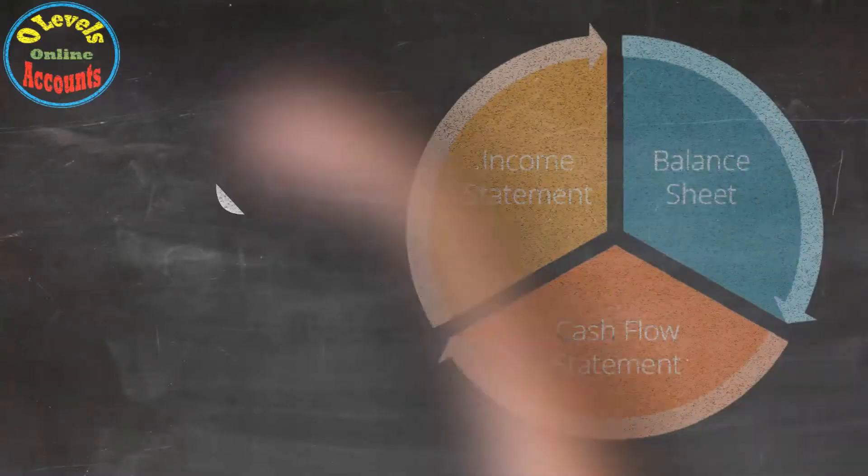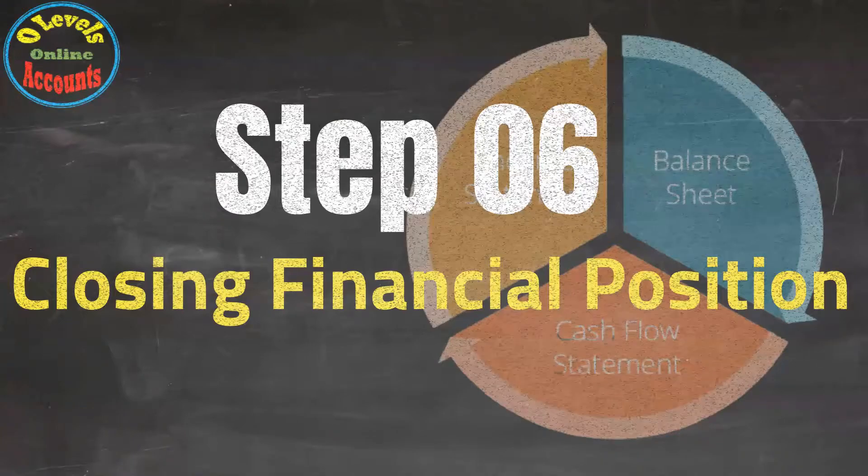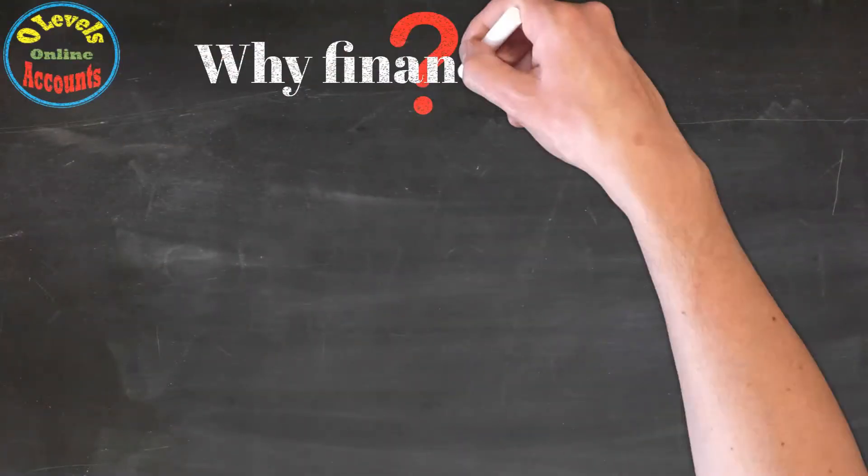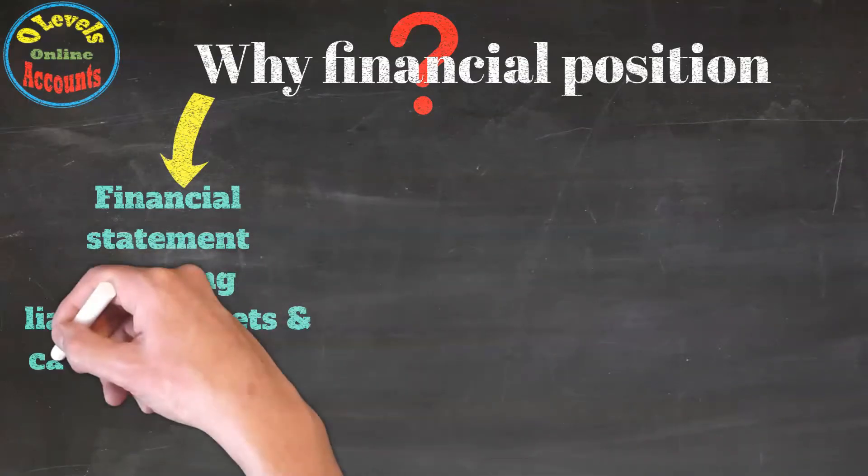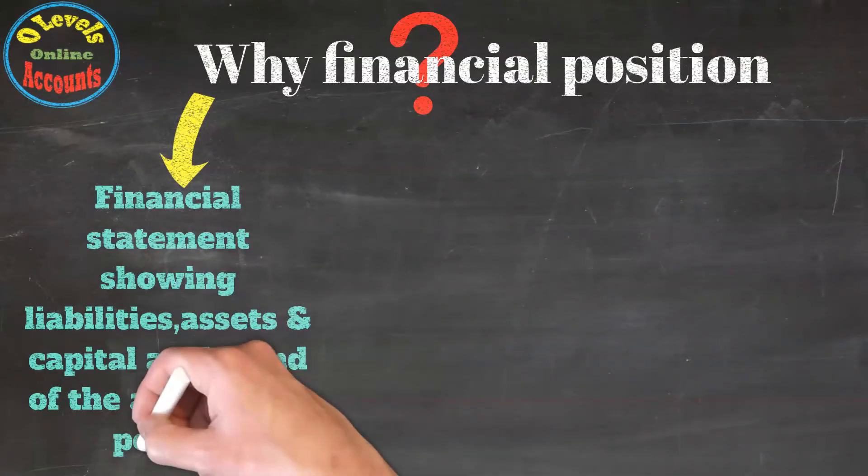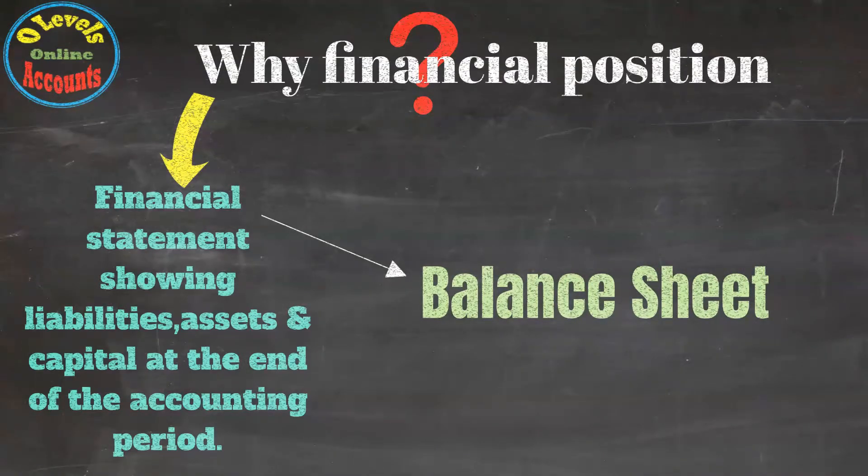The final step relates to determining the financial position. This is a financial statement showing liabilities, assets, and capital at the end of the accounting period. For this purpose, we prepare the balance sheet, which we discussed in detail in previous lessons.